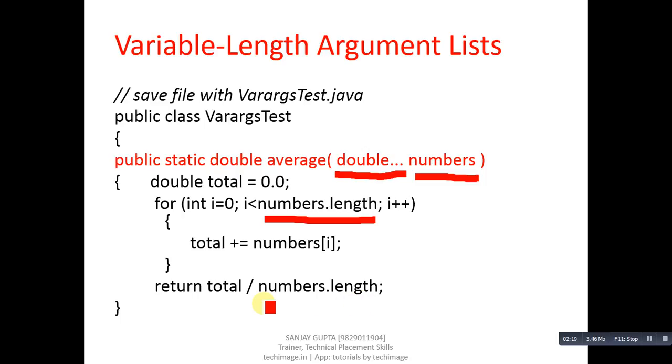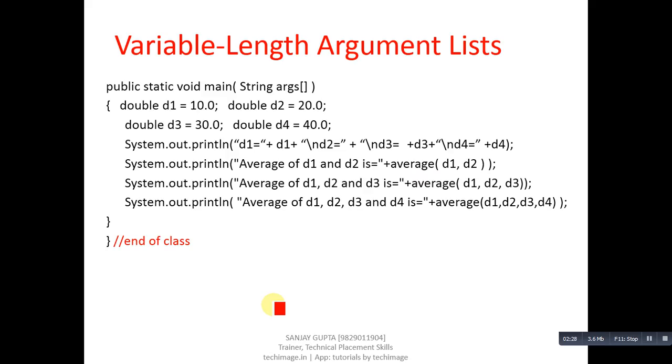This expression will return the average of total which is performed with the help of above loop. Now inside main function I have declared four variables: d1, d2, d3 and d4.